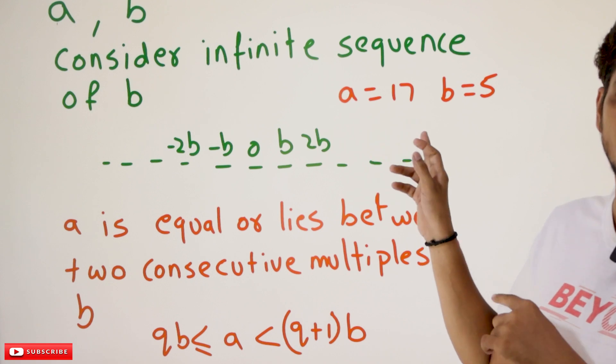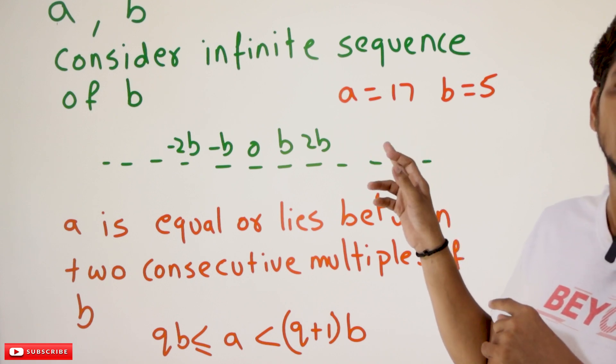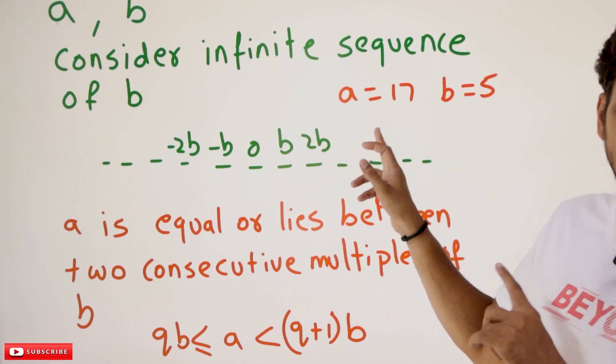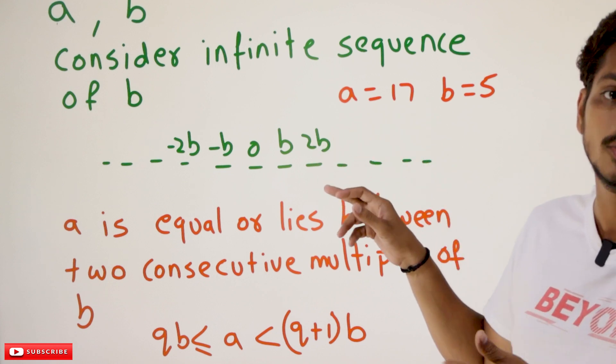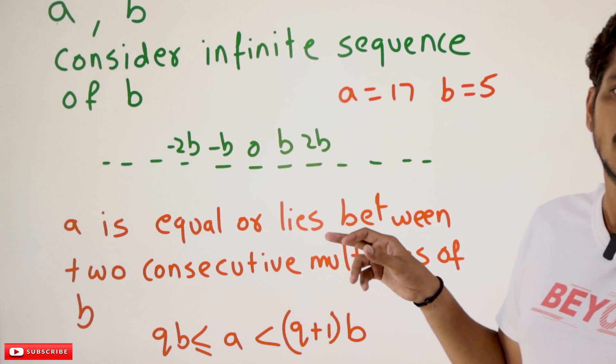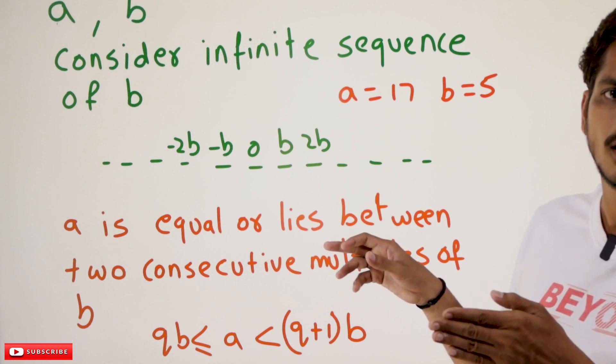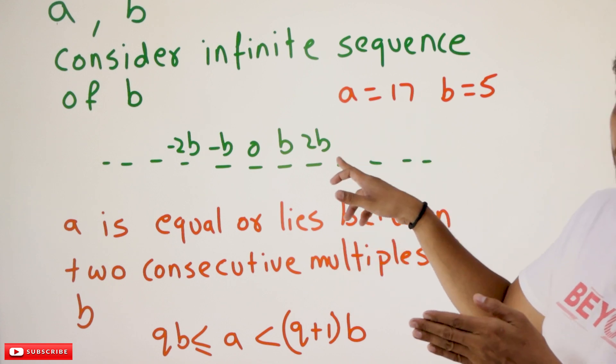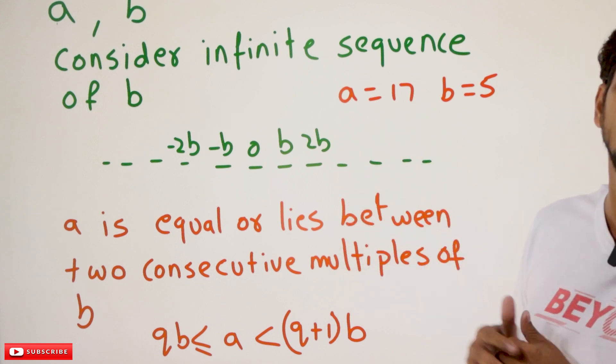So this is what 3B means, B multiplied by Q. Here Q value is 3, which is 15. And the remainder value is 17 minus 15, which is 2. 2 is the remainder value.